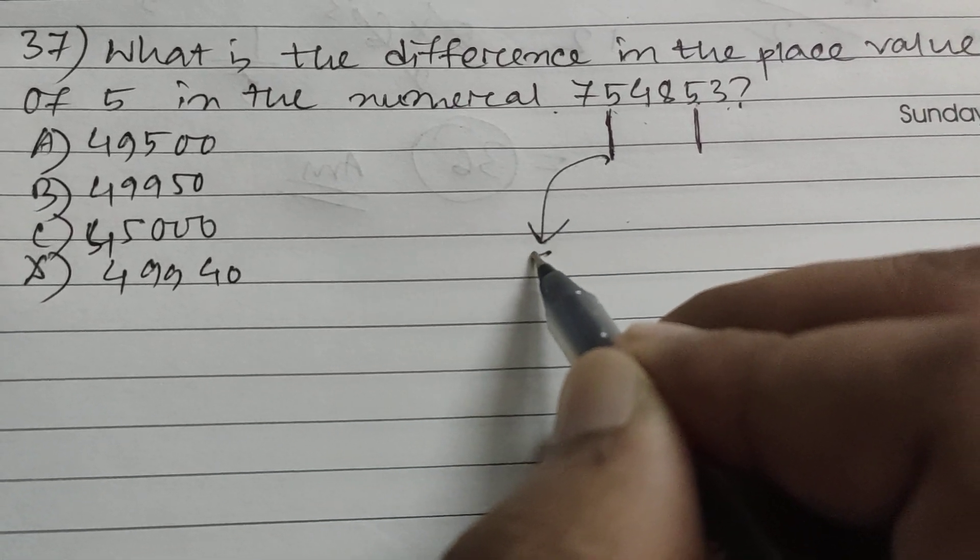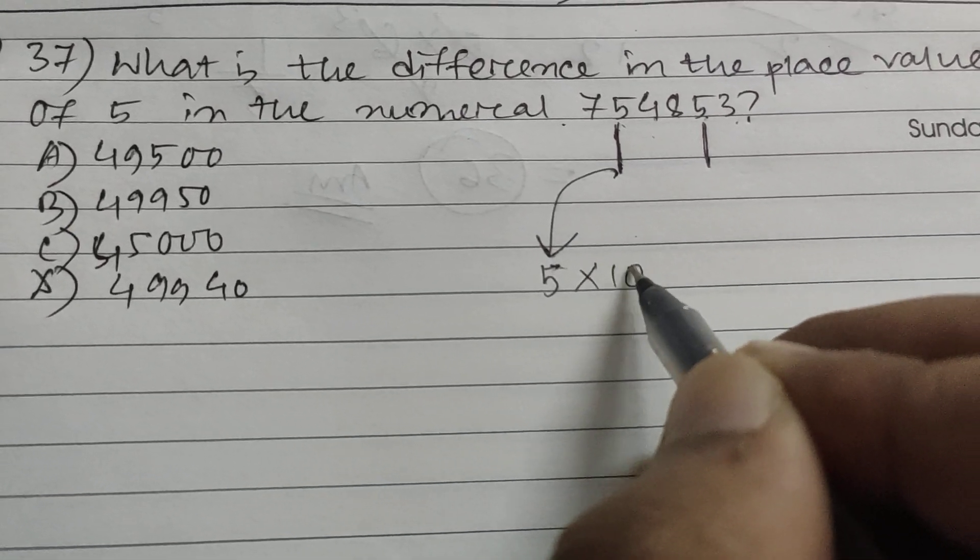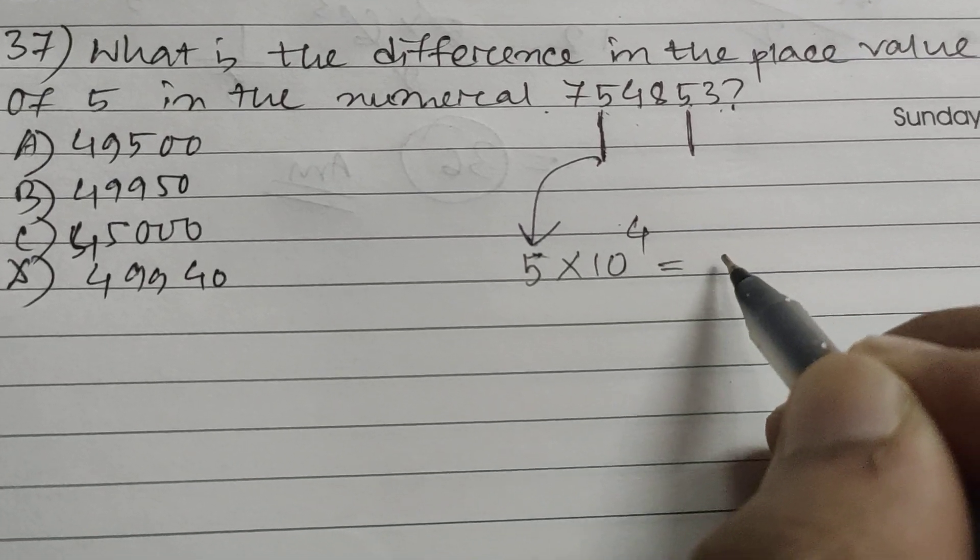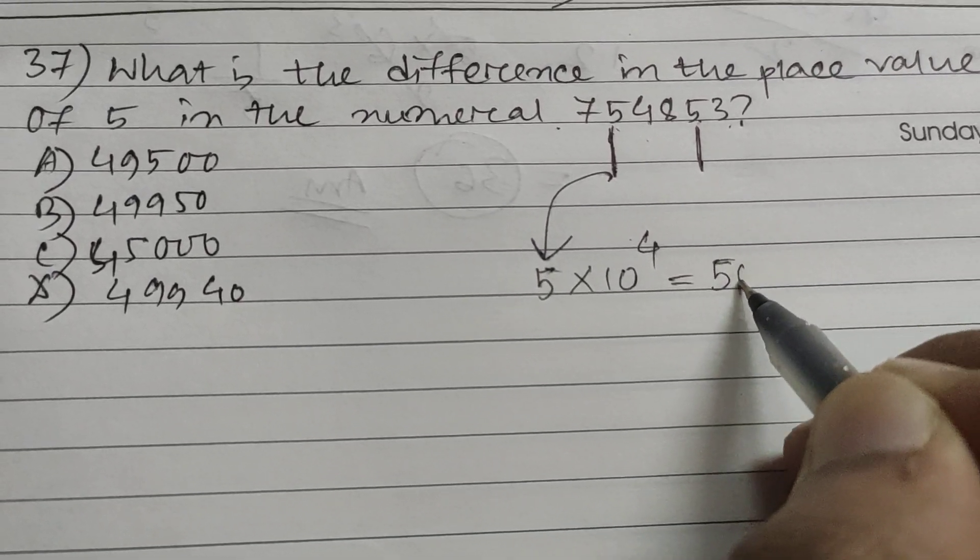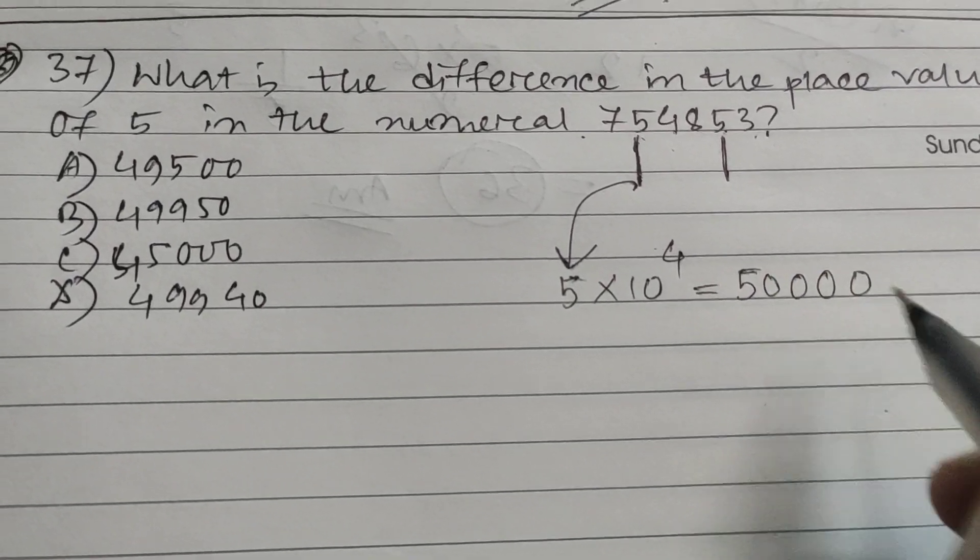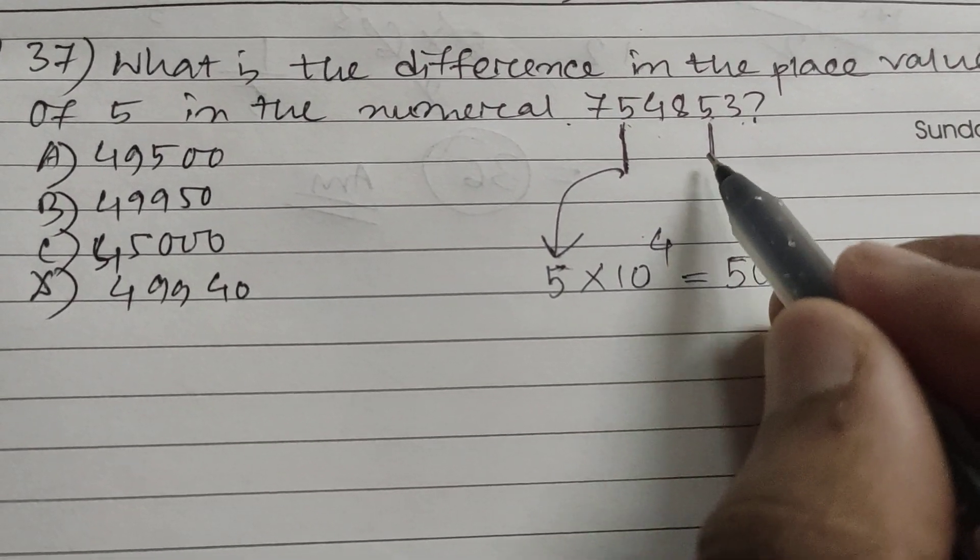So 5 times 10 to the power 4, that's 5... counting 1, 2, 3, 4, right? And for the second one,